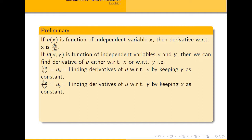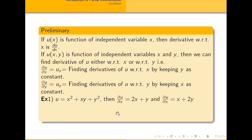Let's solve some examples. Suppose u = x² + xy + y². Finding the partial derivative with respect to x gives 2x + y, since y is treated as constant. The partial derivative with respect to y: the derivative of x² is 0, the derivative of xy with respect to y is x, and the derivative of y² is 2y. So ∂u/∂y = x + 2y.